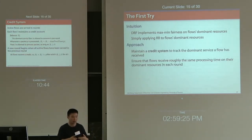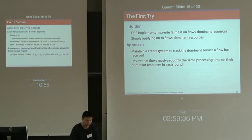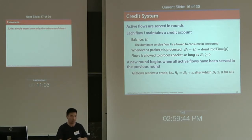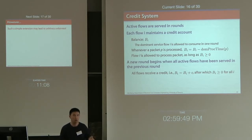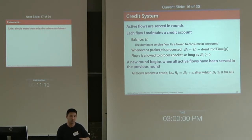In the credit system, each flow i maintains a credit account with balance B_i, representing the dominant service flow i is allowed to consume in one round. Whenever a packet P is processed, we withdraw the corresponding credits from the account — specifically, we deduct the dominant processing time from B_i. Flow i is allowed to process a packet as long as it has a positive balance. When all flows have been served in one round, a new round starts.